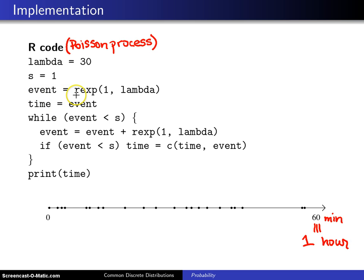Event = rexp(1, lambda), and so what that will do is generate a single exponential—R for random and exp for exponential. We set time equal to whatever random exponential was just generated. Then there is a while loop: while that event time is less than our ending time s, we say event = event + rexp(1, lambda), same statement as before, but this time we're moving forward in time.